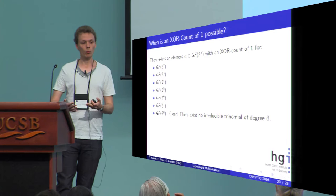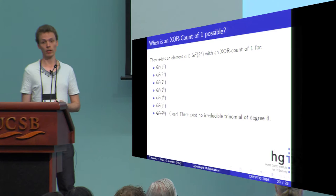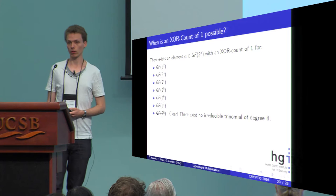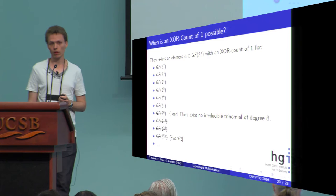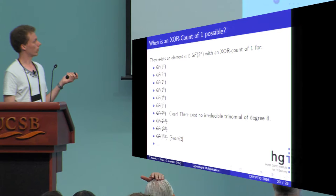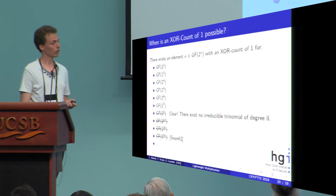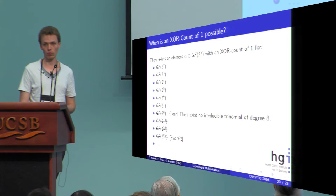Now we see why it's clear that there are no elements with XOR count 1 in this field because there does not exist an irreducible trinomial of degree 8. There are much more other fields for which this is the case that there exists no irreducible trinomials. For example by a result of Swan from 1962 there are no irreducible trinomials of degree 8k for any natural number k. So for all these fields we cannot find elements with an XOR count equal to one.